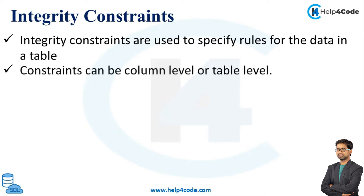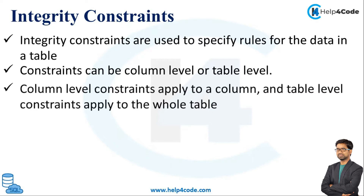Integrity Constraints can be at column level or table level. Column level constraints apply to a column, and table level constraints apply to the whole table. So if we apply a constraint to a column, it will apply to that same column. And if it is at table level, then it applies to the complete table.